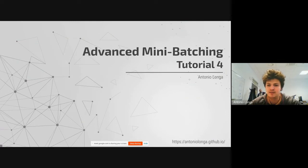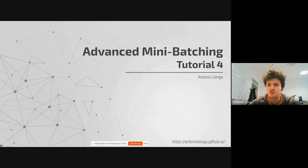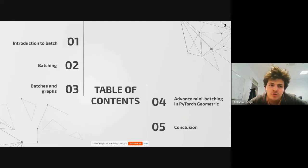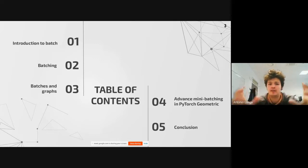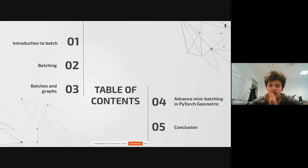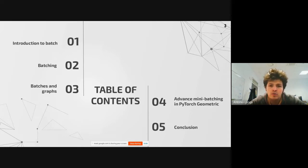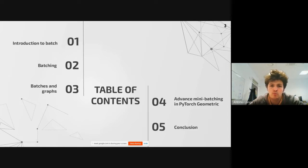Welcome everyone. This is tutorial five — sorry for the typo. Today we're going to talk about advanced mini-batching. In particular, I'm going to introduce the concept of batching and why we need it, some general ideas about batching, the problem of batching with graphs and how we can handle it, and then we'll see how with PyTorch Geometric we can do some advanced stuff with mini-batching. We'll cover bipartite graphs to show what we can do with PyTorch Geometric.